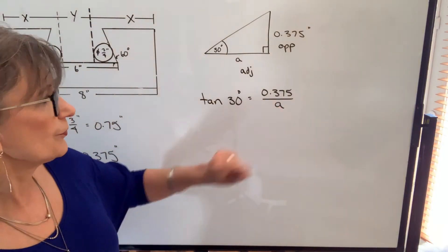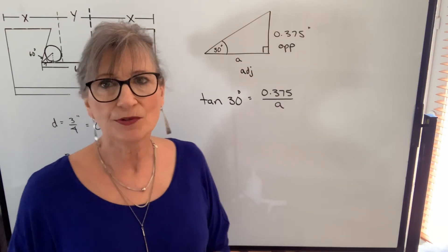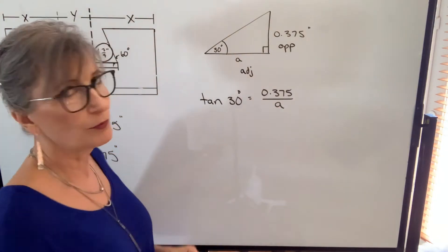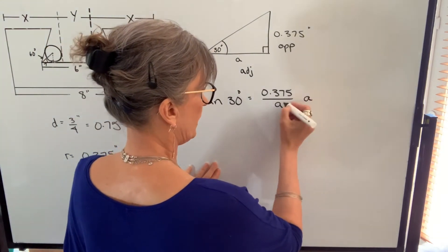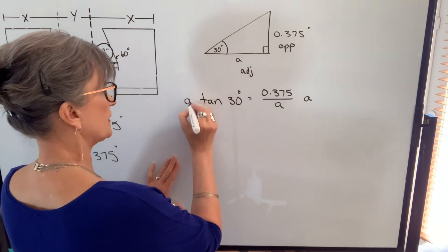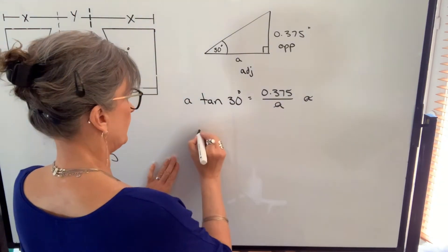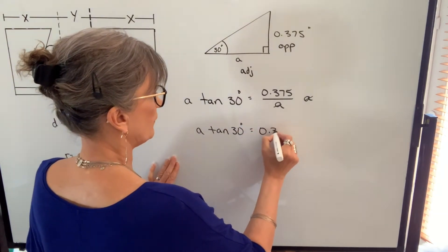So we want to solve for A. There's different ways you can approach it. I'm going to do it in a couple of steps so I don't lose anybody. First of all, I can't solve it while it's in the denominator. So I'm going to multiply by A. So it will cancel on this side. And whatever I do to one side of the equation, I do the same thing to the other side. So the A's cancel here and I'll have A times the tangent of 30 degrees equals 0.375.